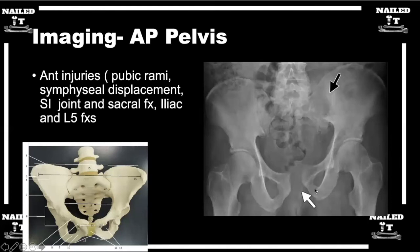Yeah, of course. Actually, there may be a slightly easier way to do that. If you look at the L4-L5 disc space and then the relationship of the ilium in reference to that relatively horizontal line, you can see that the left hemipelvis is cranially displaced in comparison to the right side, in reference to that horizontal line that you can draw on most imaging software. That usually will tell you that there's some vertical instability.